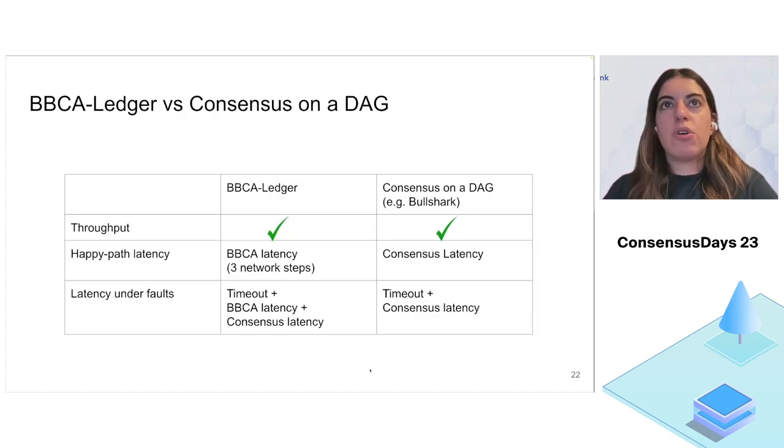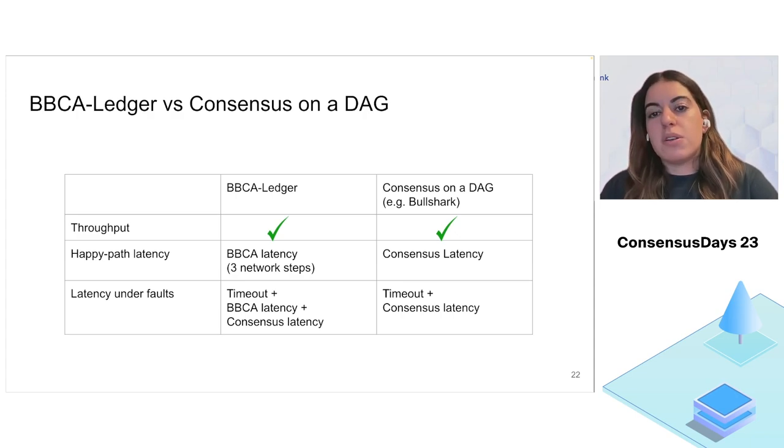This leads us to talk about Babka performance versus consensus on a DAG. We can estimate that Babka performs in throughput very similar to consensus on a DAG because we utilize the DAG to ensure that no broadcast goes wasted. The happy path latency with Babka, however, is very nice - just three network steps as long as everybody fills the log slots. Consensus on a DAG has to suffer consensus latency, which depends on when the leader commits. Latency under fault in both cases depends on some timeout eventually happening. For Babka, we need the latency for the finalized blocks plus some consensus latency to decide what to do with them. Consensus on a DAG needs to eventually find consensus to commit the previous blocks.